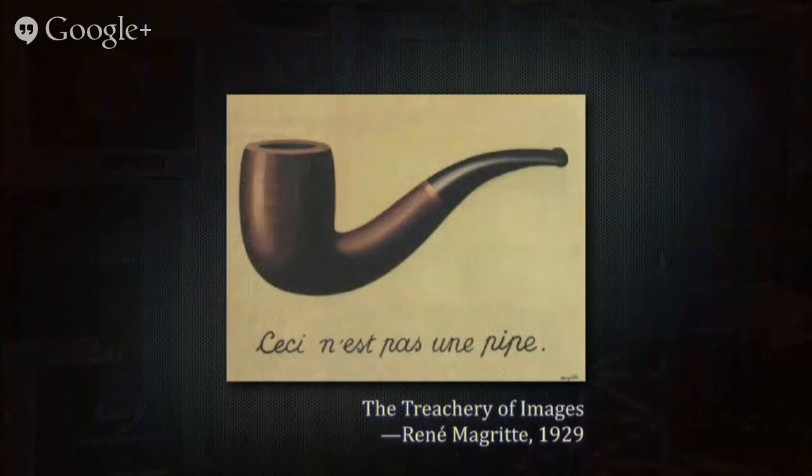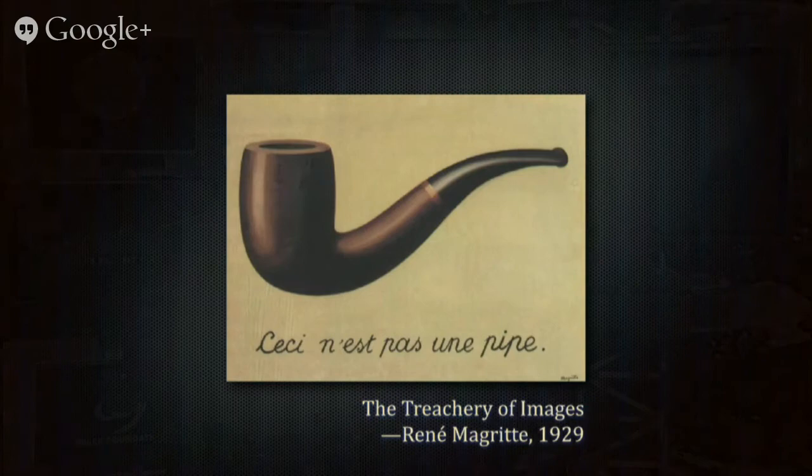I'd like to start with an image which is probably the most unusual picture you'll see all week at Space Symposium because it has nothing to do with aerospace. This is one of my favorite paintings: René Magritte's 1929 painting, The Treachery of Images. It says in French, 'this is not a pipe.' Many of you have seen this painting before. Well, of course it's not a pipe — it's a painting of a pipe. And here on a Google Hangout, it's even more abstract: it's a digital representation of a painting of a pipe.